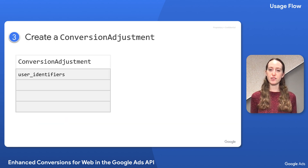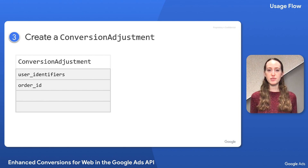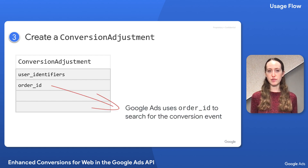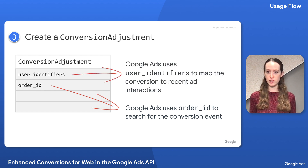The next step is to create a conversion adjustment object for each enhancement. The normalized and hashed user data goes in the user identifiers field of the adjustment, with a separate user identifier object for each identifier. You'll also need to set the order ID, which uniquely identifies the conversion event. The order IDs on your adjustments should match up to the order IDs that are sent by the tag you configured on your website. With the order ID you provide, Google Ads searches for the conversion event and then uses the additional user data you provide to tie that conversion event to any other recent ad interactions the user undertook while logged in.